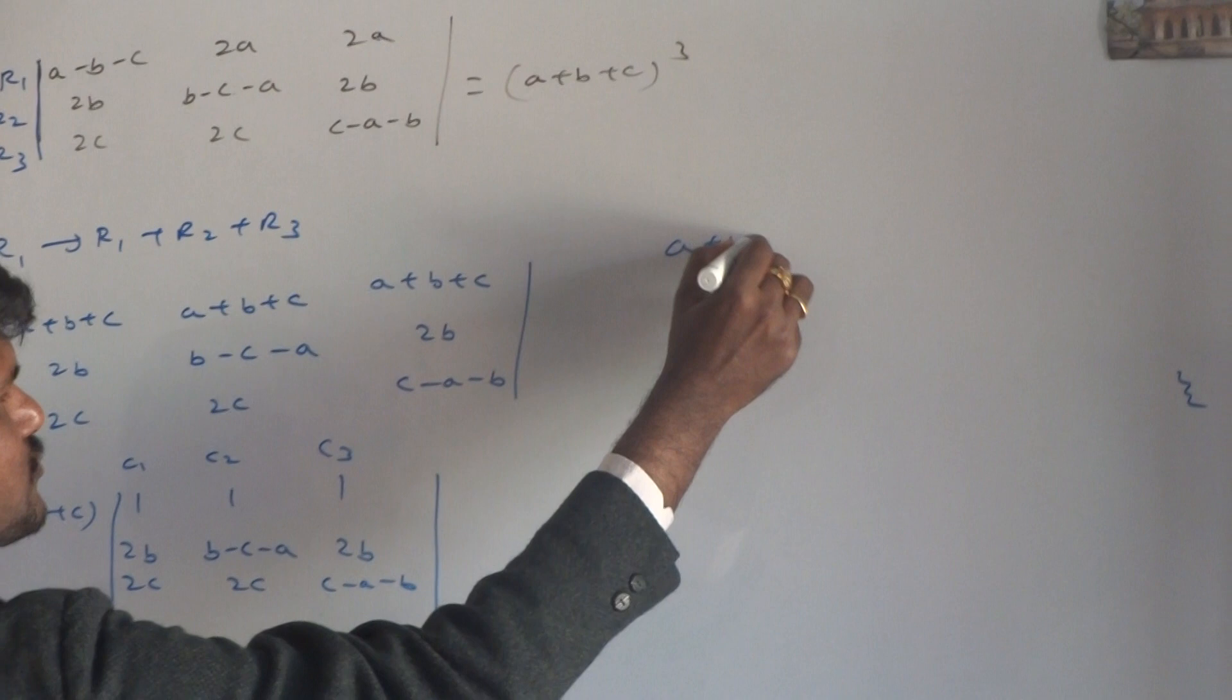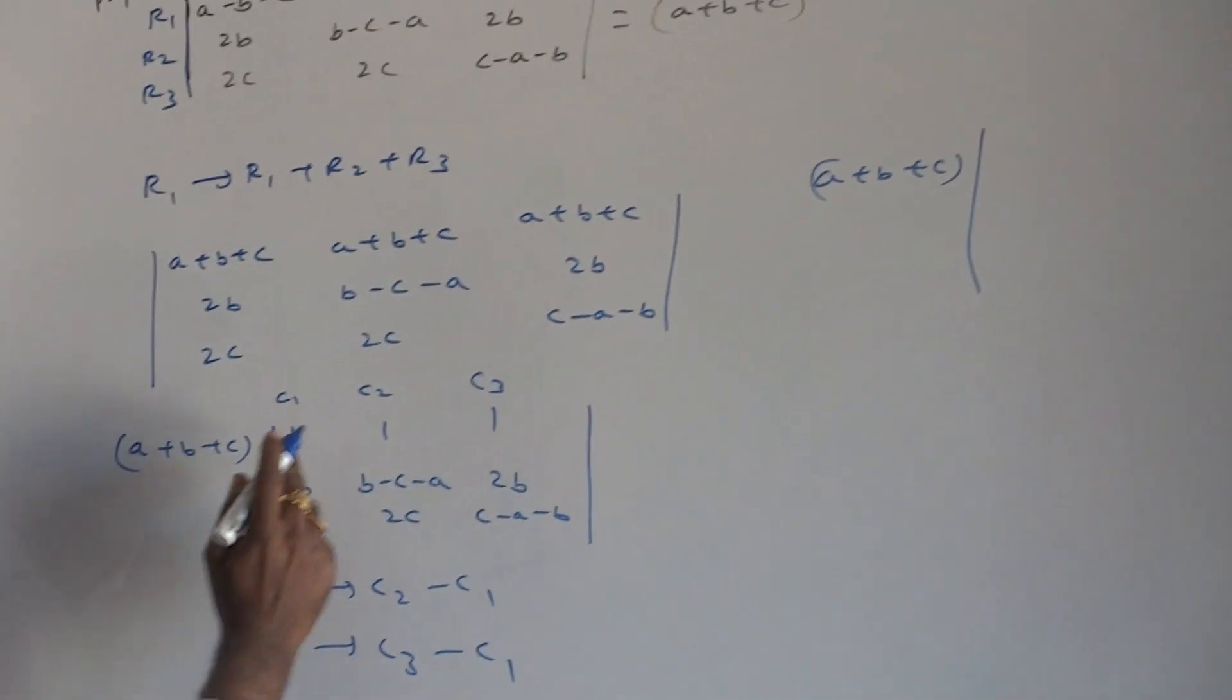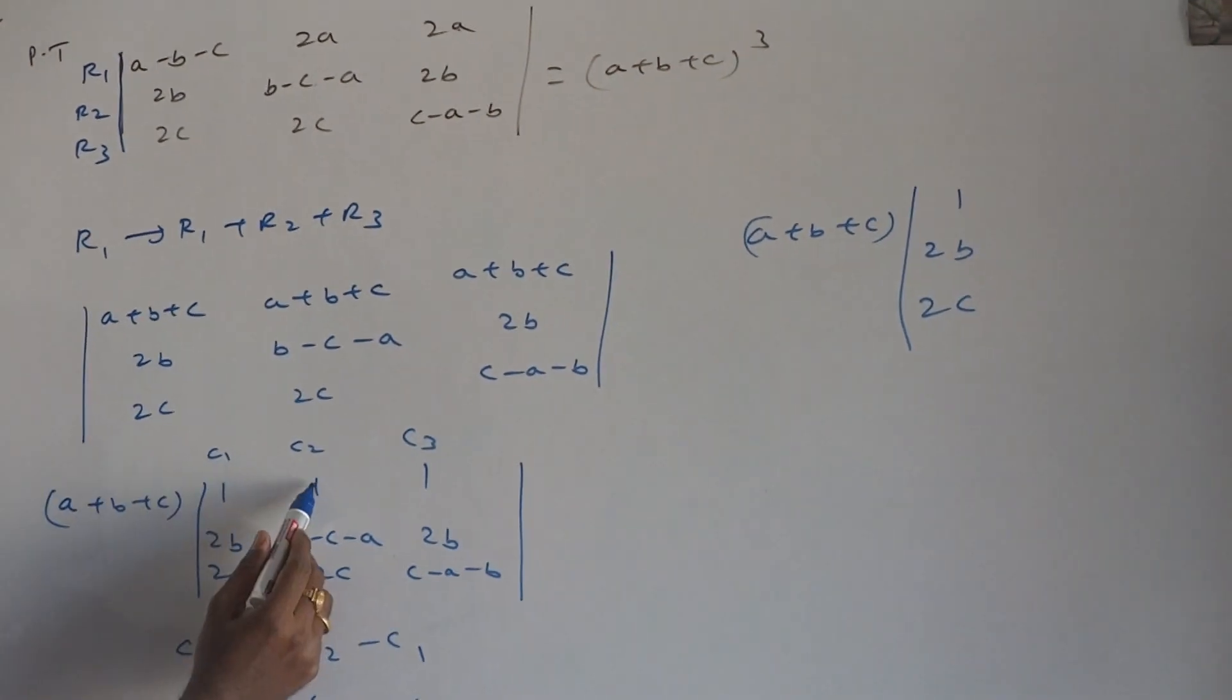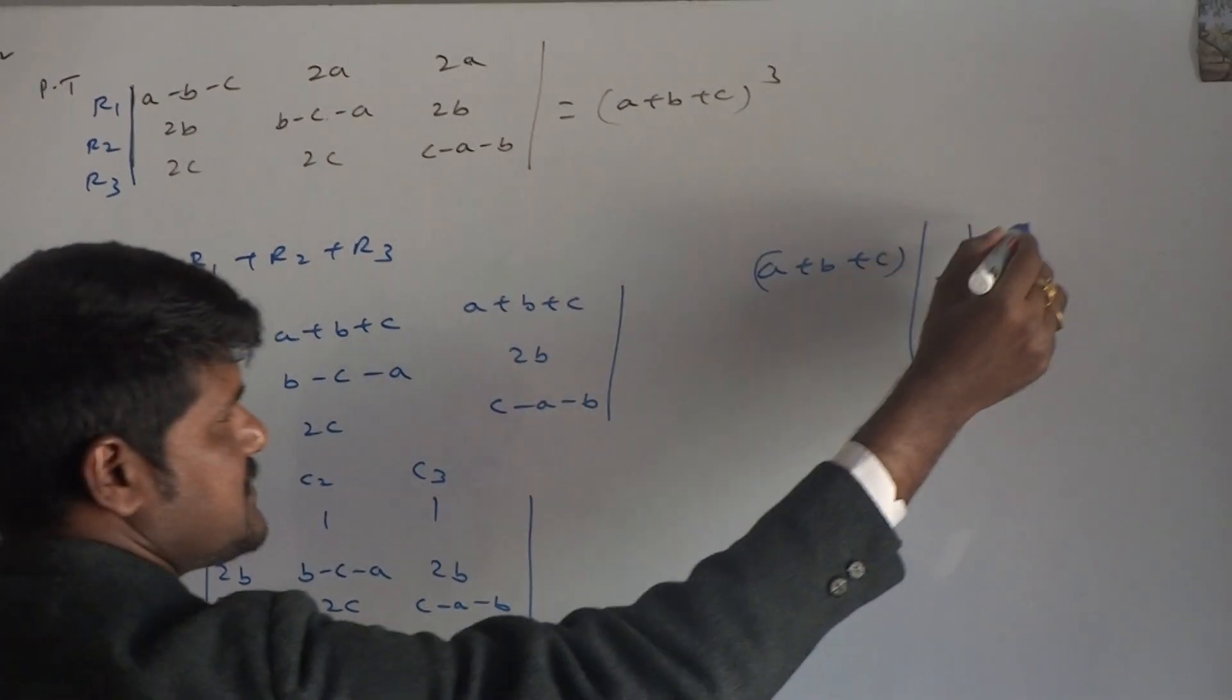A plus B plus C outside. No change in column 1, first element. 1, 2B, 2C. Column 2 first element, column 1 first element. Subtract, 1 minus 1. Zero.